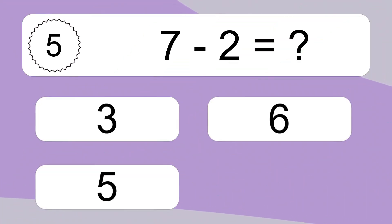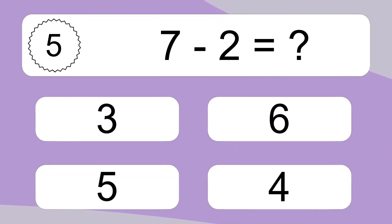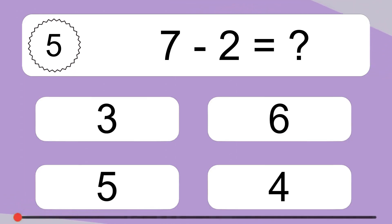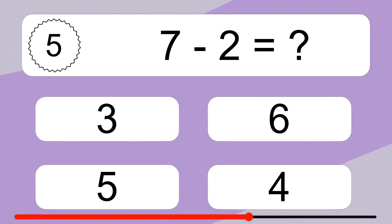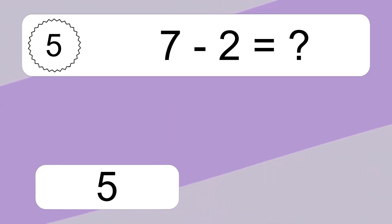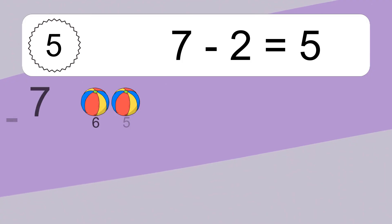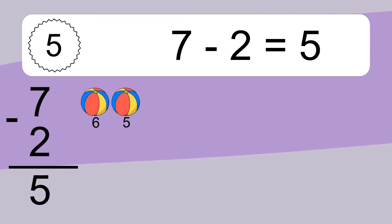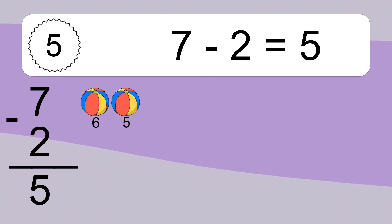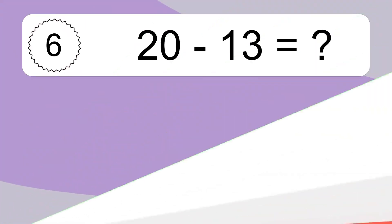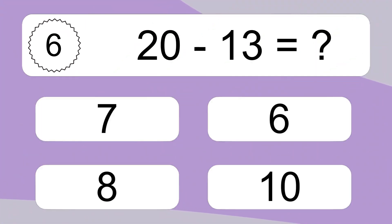2. 7 minus 2 equals what? 7 minus 2 equals 5. Let's count it. 6, 5.